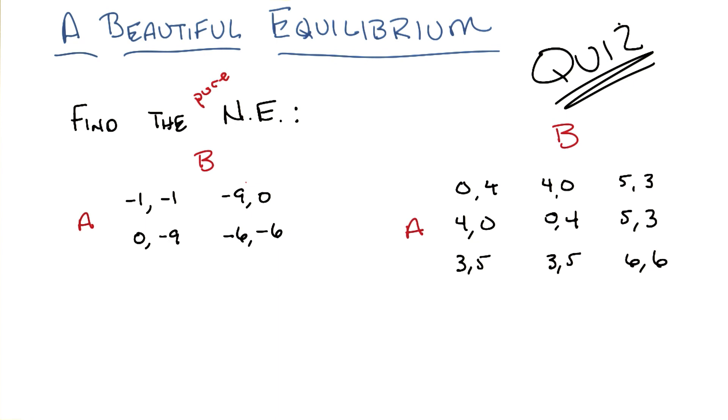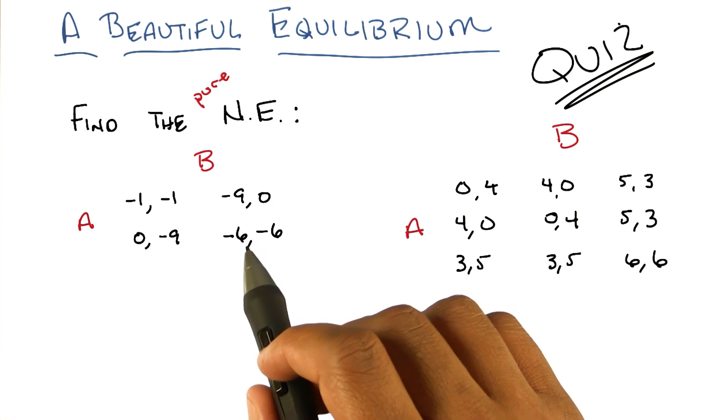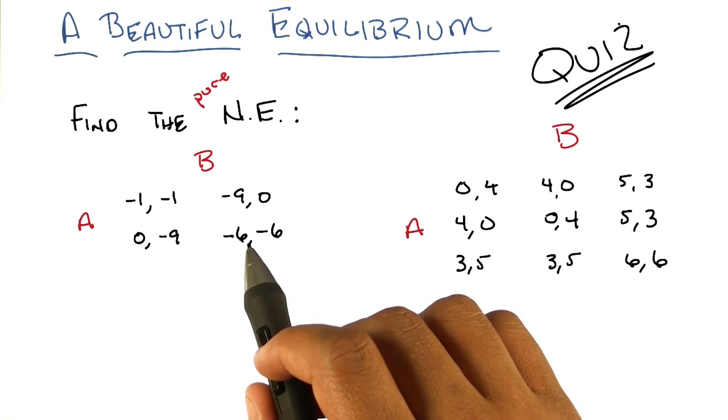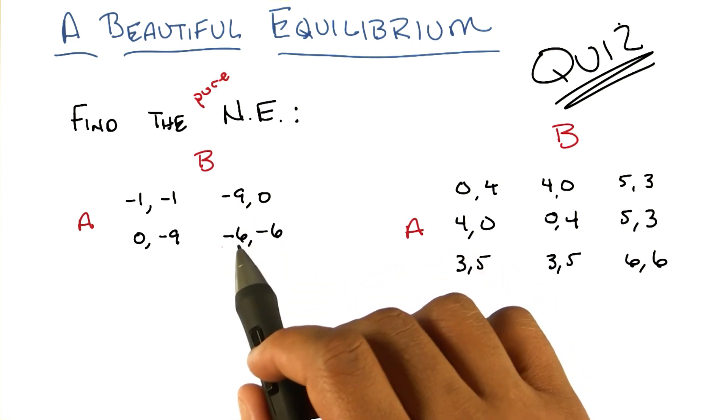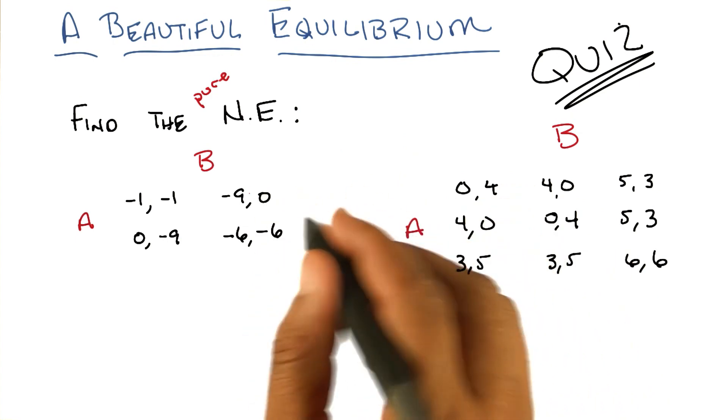which is we can just check each one of them with the definition. But in the case of Prisoner's Dilemma, I think a natural place to start would be that minus 6, minus 6. So let's say that A chooses the second row and B chooses the second column. Let's see if that's a Nash equilibrium. So both players need to be happy. Would A be happier switching? If A switched, it would be getting minus 9, which is worse. So A is happy where A is. And if B switches, B would be getting minus 9. So boom, Nash equilibrium. Done.